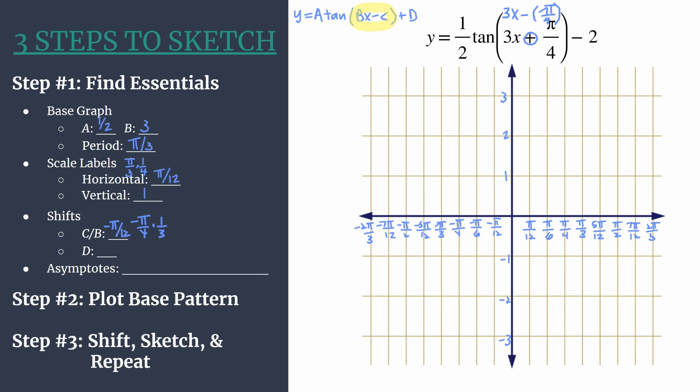Now d is a little bit easier to find. All you have to do is look at the end of the equation. We see the minus 2. So d is negative 2, which means we'll be moving down 2. If it helps you to write left here and down, do that. It's always nice to have little reminders for yourself.